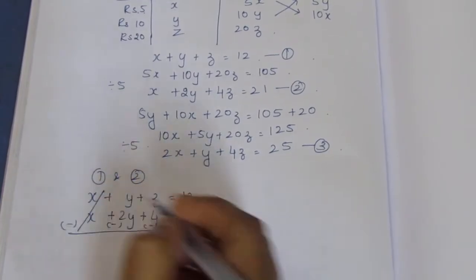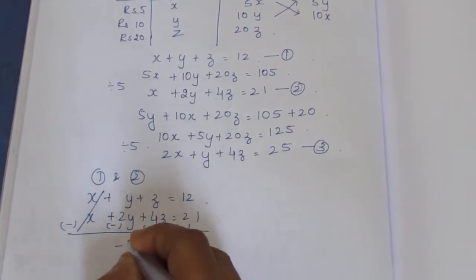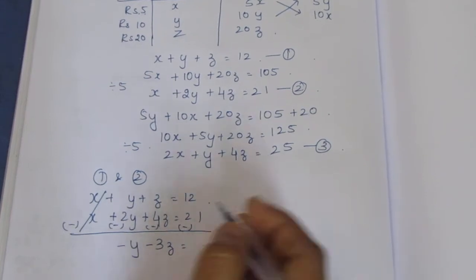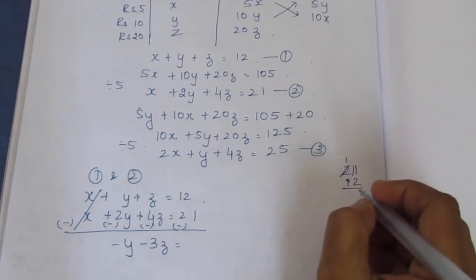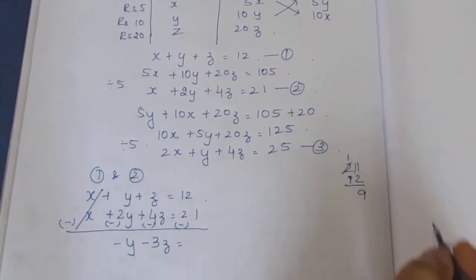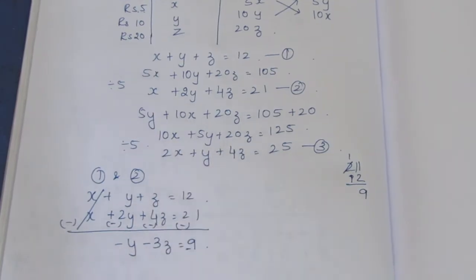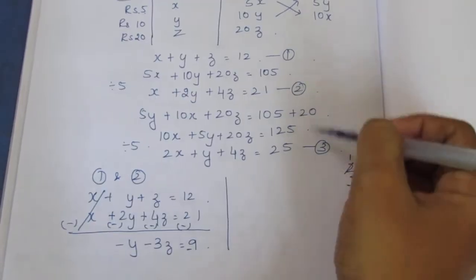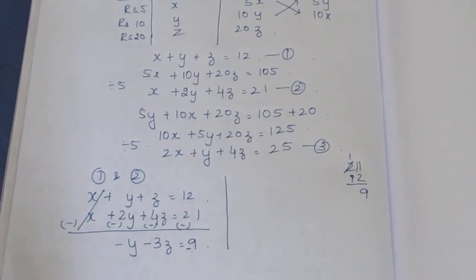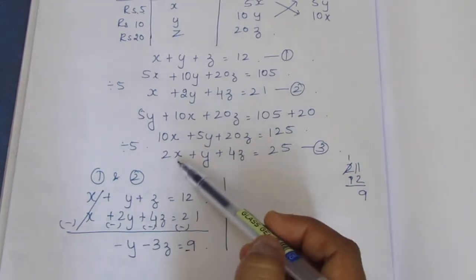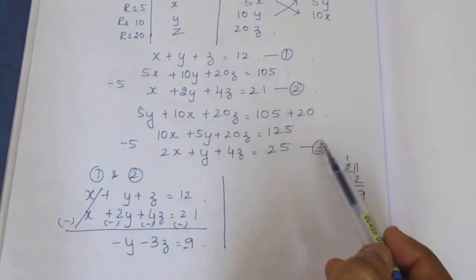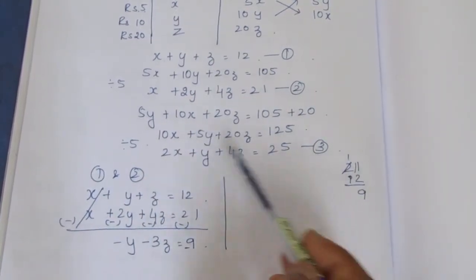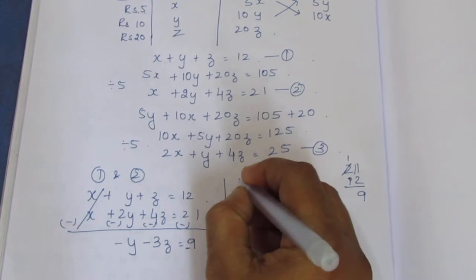After sign change and cancellation, we get minus y minus 3z equal to 21 minus 12, which is minus 9. Now solving equations 1 and 3: x cancels, x cancels. Working with equations 1 and 3.